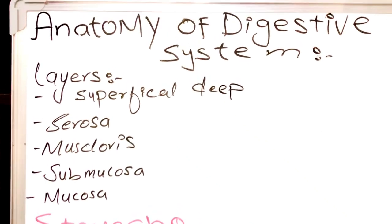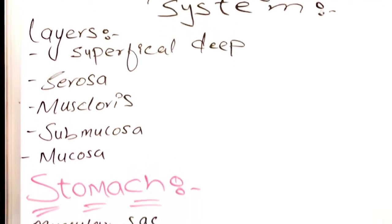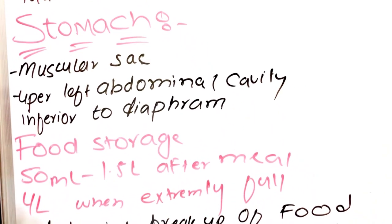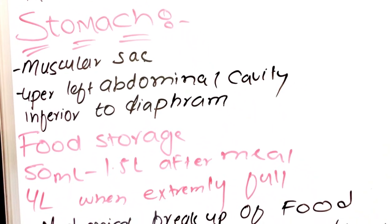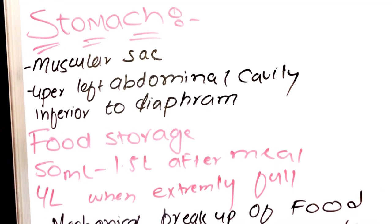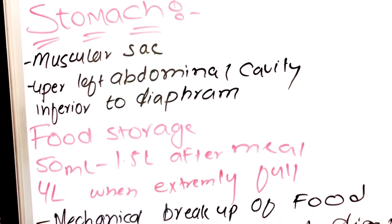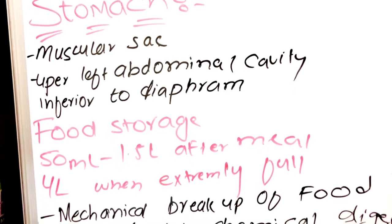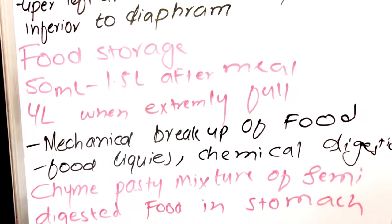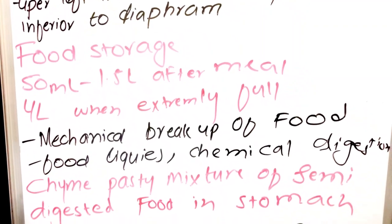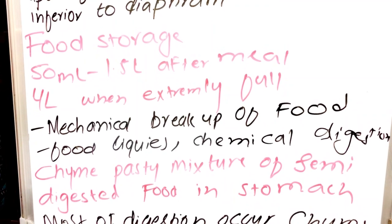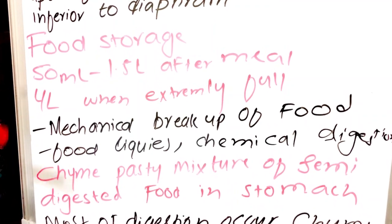Now we will talk about the stomach. In the first part we will discuss the general anatomy, and in the second part the gross anatomy. The stomach is a muscular-shaped organ located in the upper left abdominal cavity, inferior to the diaphragm. Food storage in the stomach is 50 ml to 1.5 liters after a meal, and when extremely full the capacity is up to 4 liters.